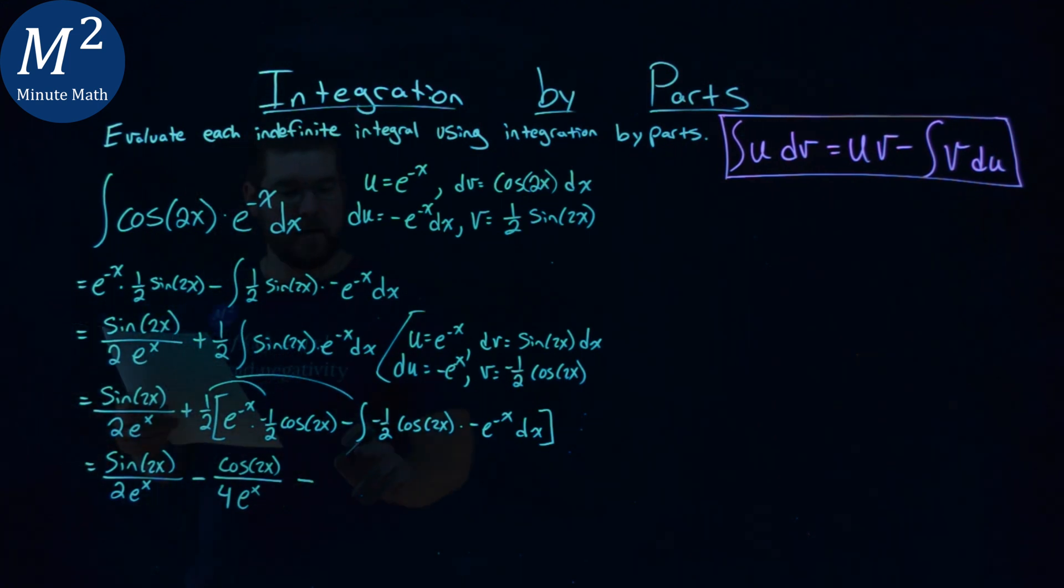Minus. The one-half comes over here, and we're going to actually pull out this other one-half out here. So we have one-half. Minus, minus makes it a positive one-fourth. But then this negative comes out, which makes it a negative.